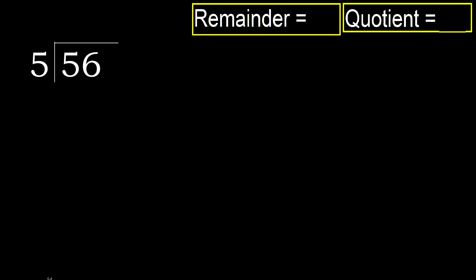56 divided by 5. 5 is not less, therefore start with 5. 5 multiplied by which number is nearest to 5, but not greater?